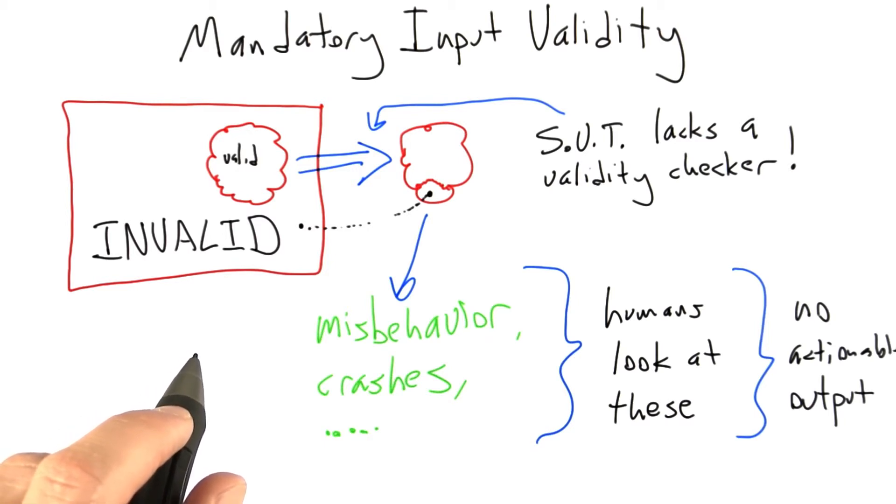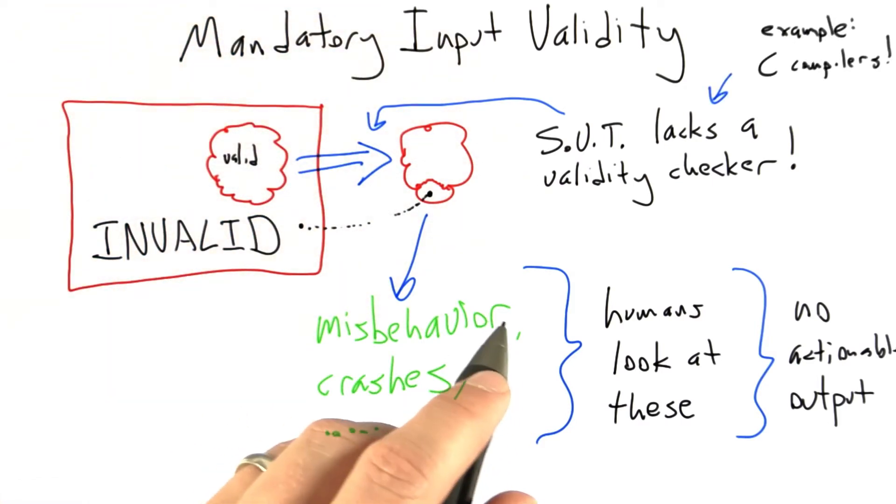It turns out that C compilers contain, it turns out the C compilers don't contain a good validity checker for C. The reasons for that are kind of involved, but the quick answer is, if you have a C program,